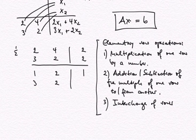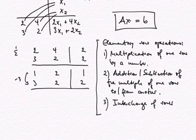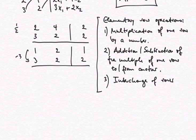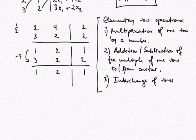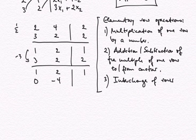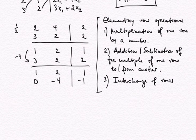I haven't done anything on the second row. Now I subtract three times the first row from the second. This gives me: 3 minus 3 times 1 is zero; 2 minus 3 times 2 is minus 4; 2 minus 3 times 1 is minus 1. Now I multiply the second row by minus one quarter. This gives 0, 1, and minus minus is plus, so plus one quarter.